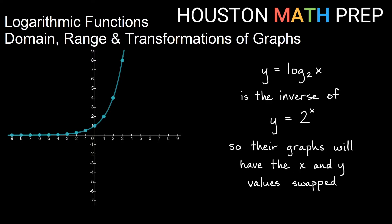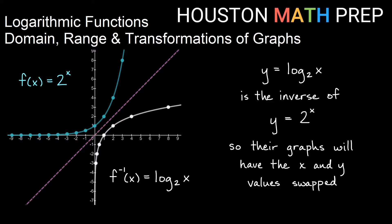Now let's shift to looking at the graphs. Remember that a log is the inverse operation of an exponential with the same base. Here I've graphed y equals 2 to the x. Log base 2 of x is the inverse of y equals 2 to the x, so we swap the x and y values. Swapping x and y values reflects across the line y equals x. For example, 1 comma 2 reflects to 2 comma 1, and 2 comma 4 reflects to 4 comma 2. So our inverse function log base 2 of x looks like this reflection across the diagonal line y equals x.